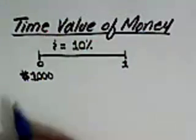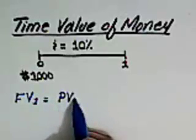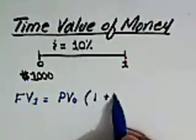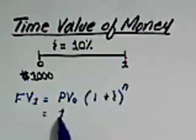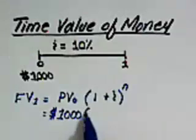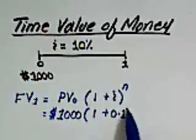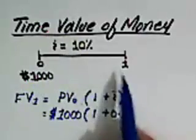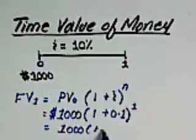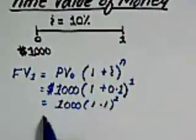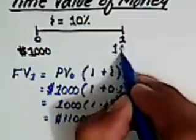So the future value of this one thousand would be: future value at the end of first year equals the present value at time zero multiplied by one plus the annual compound interest rate raised to the power of the time duration. Here, present value is one thousand dollars, multiplied by one plus ten percent, that is 0.1, raised to the power one. So one thousand multiplied by 1.1 raised to the power one.